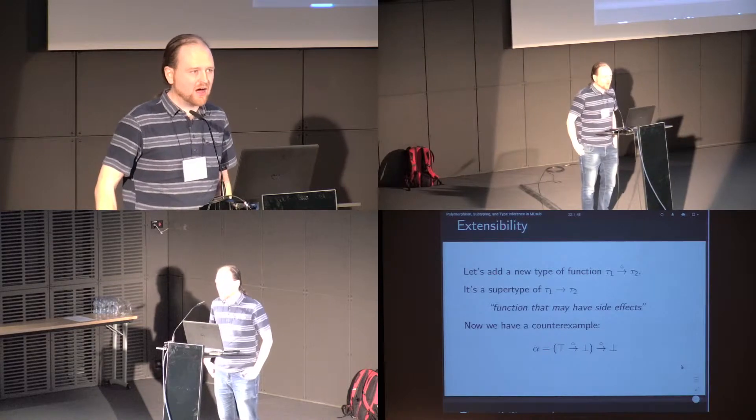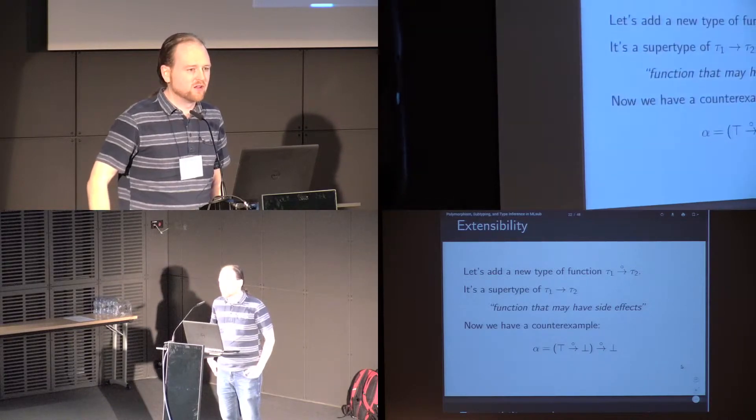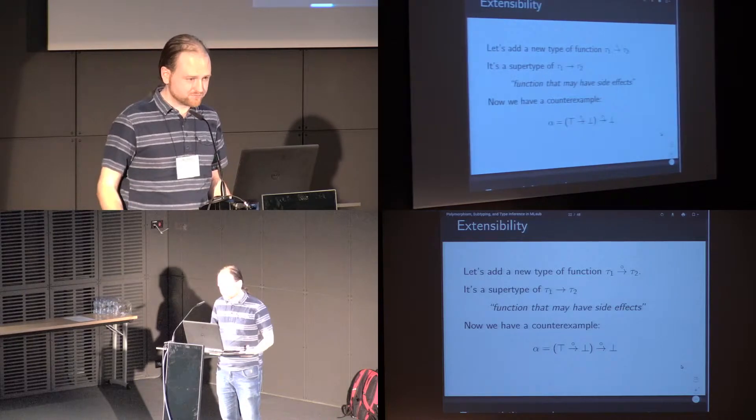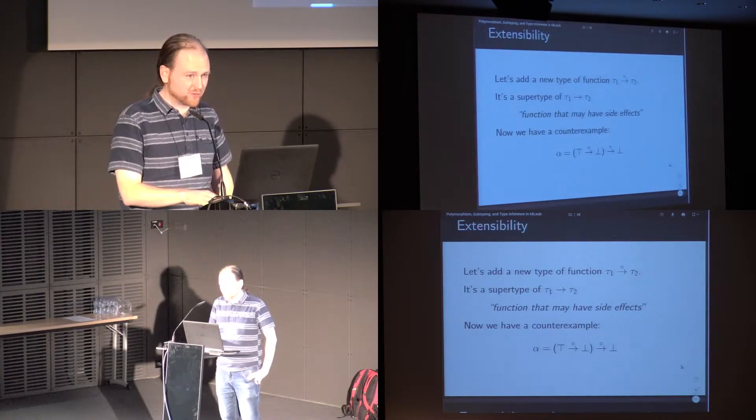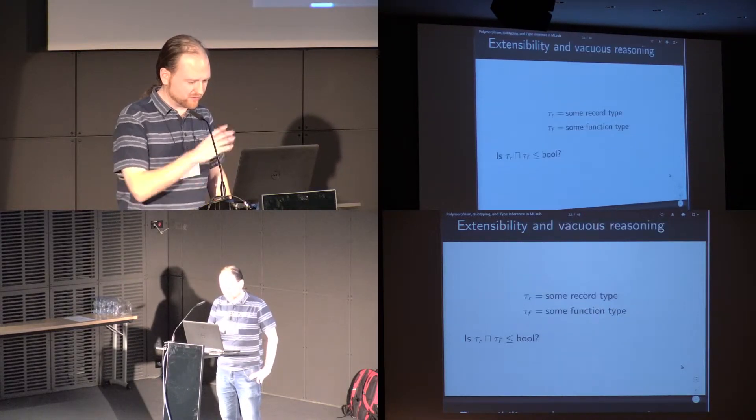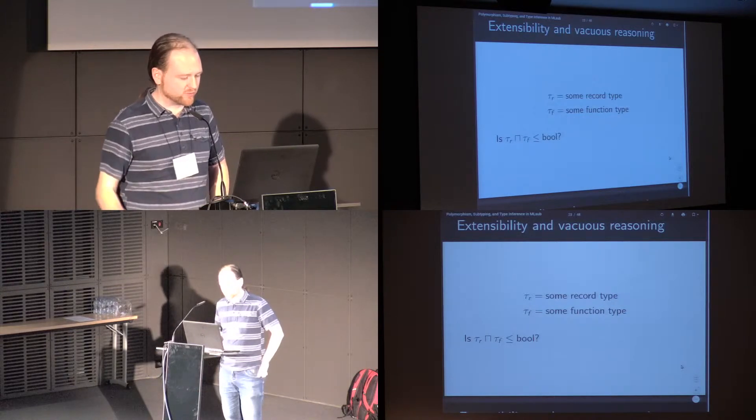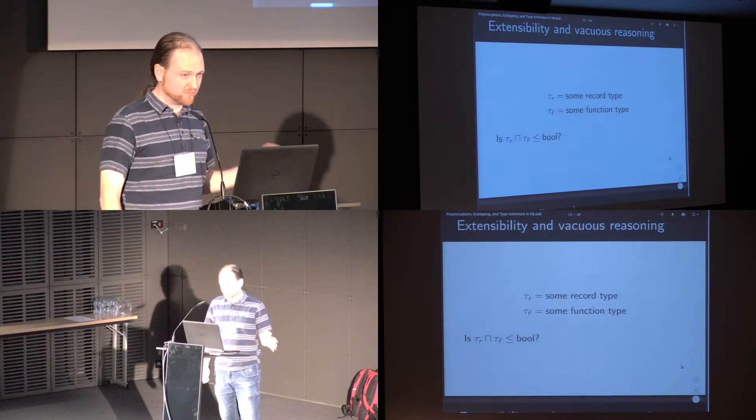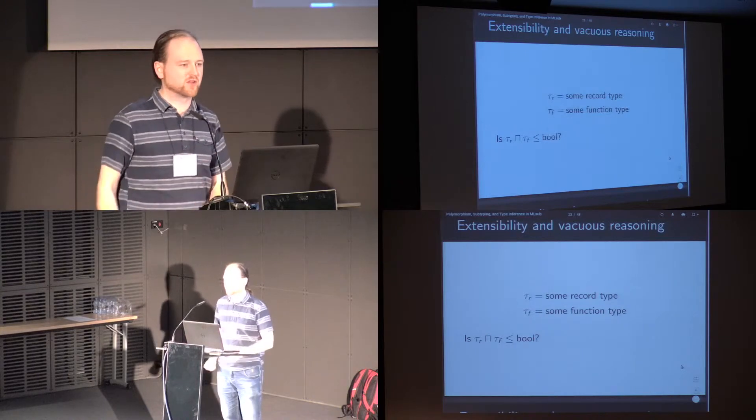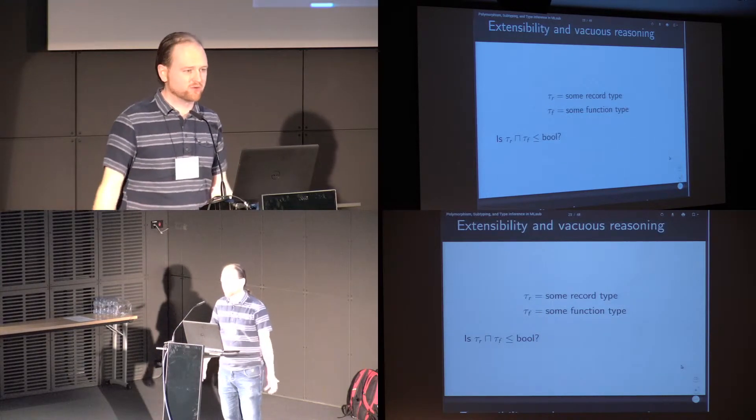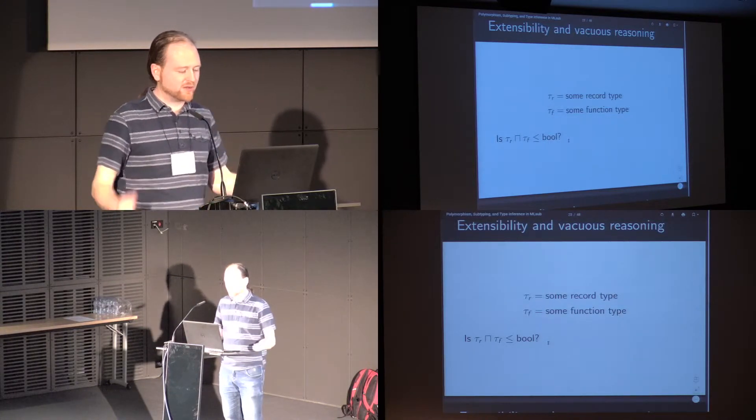So this worries me. I don't think my compiler should ever be accepting a program on the basis of the non-existence of some types. So I want to design a type system in a way which is extensible, so adding new types doesn't invalidate anything that we previously knew. The next way in which extensibility breaks in this style of definition is that it permits vacuous reasoning by defining various lower bounds to be bottom.